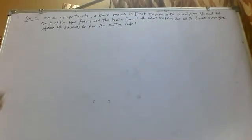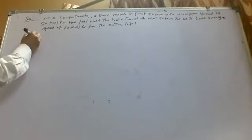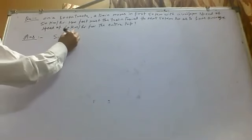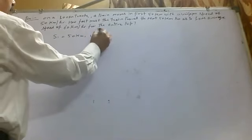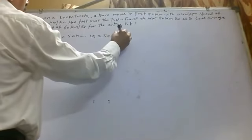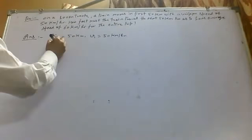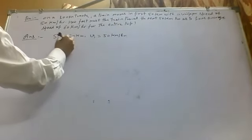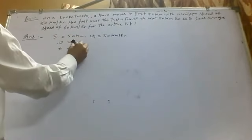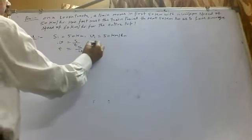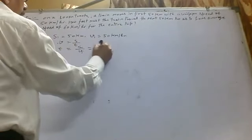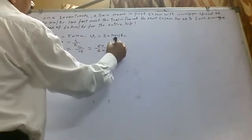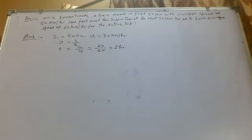In this problem there are two parts. For the first part, S1 equals 50 km, and the train moves at a constant speed of 50 km per hour. We know speed equals distance over time, so time T1 equals S1 over V1, which is 50 over 50, giving T1 equals 1 hour.